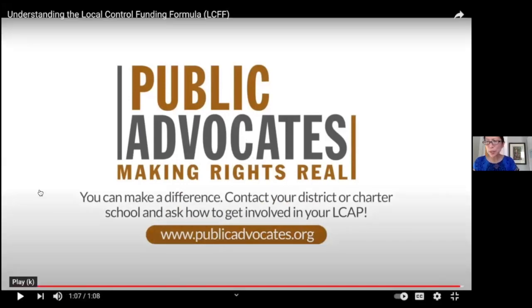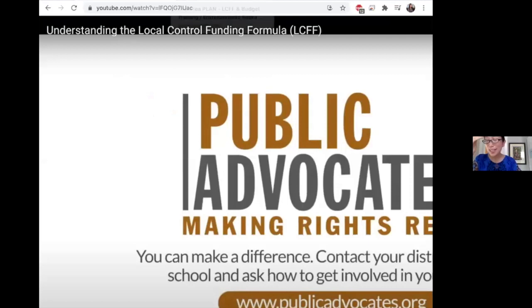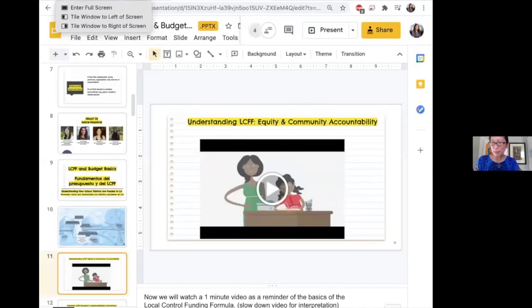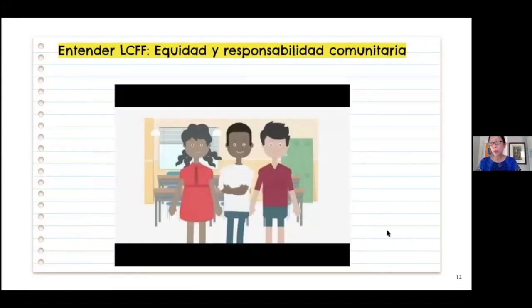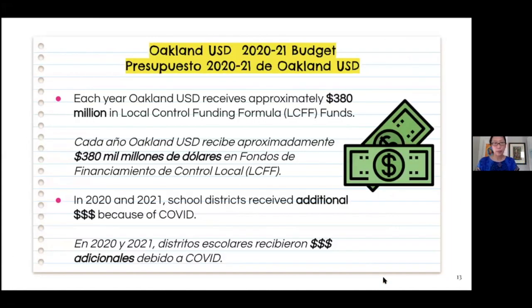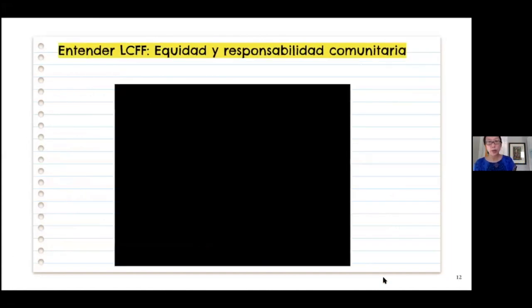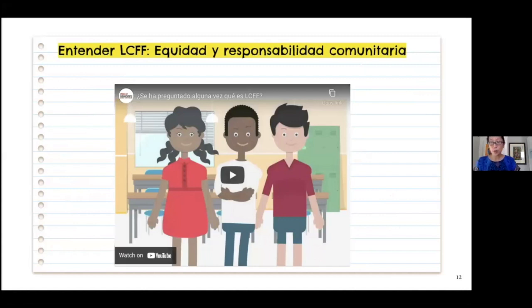That's what it means to make real the promise of LCFF — the Local Control Funding Formula. This law was won by parent leaders, parents, and students as a way to send more funding to school districts like ours that serve more low-income students, English learner students, and foster youth students. Every year, most of the budget is made up of this Local Control Funding Formula money.